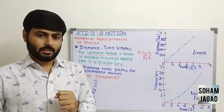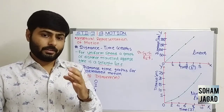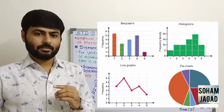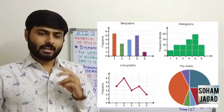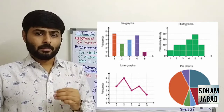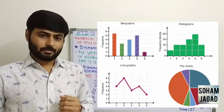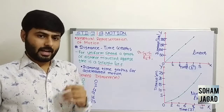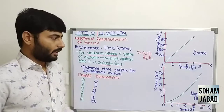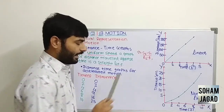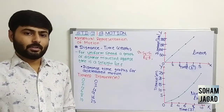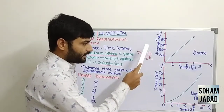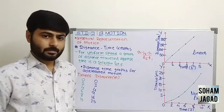Now we know what a graph is. In your previous standard, standard 8, you have learned about bar graph, line graph, histogram, pie chart, etc. In this lesson, we use line graphs. In a line graph, we have two axes: y axis and x axis.